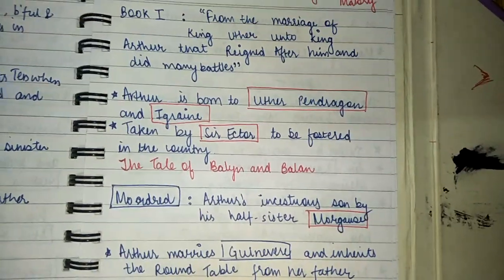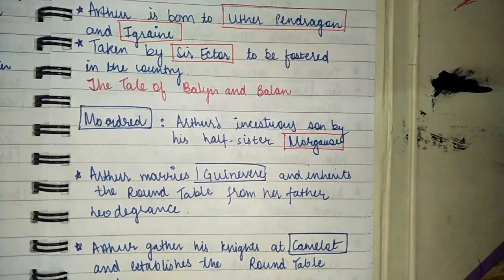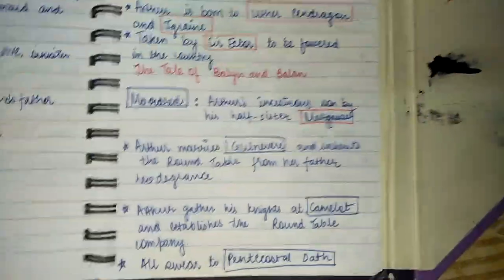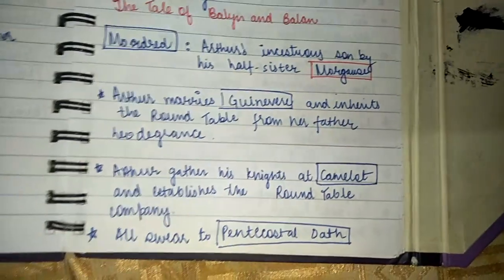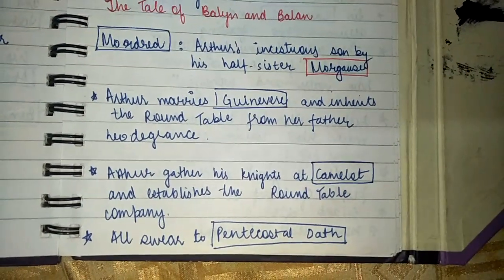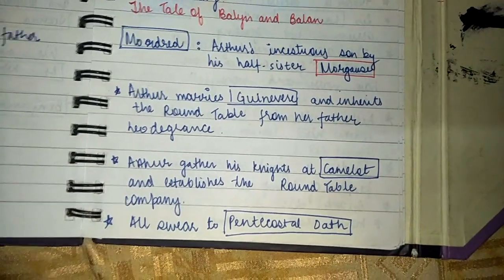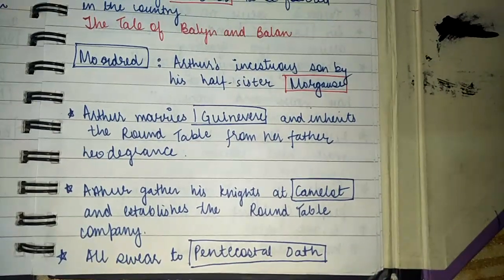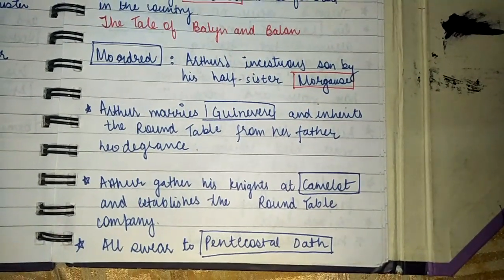The first tale is the tale of Balin and Balan. Mordred is Arthur's incestuous son by his half-sister Morgause. Arthur marries Guinevere and inherits the round table from her father Leodegrance as a form of dowry. Arthur gathers his knights at Camelot and establishes the Round Table company, which had 24 knights — each chosen as the best in their particular field. They all swore an oath, known as the Pentecostal Oath.